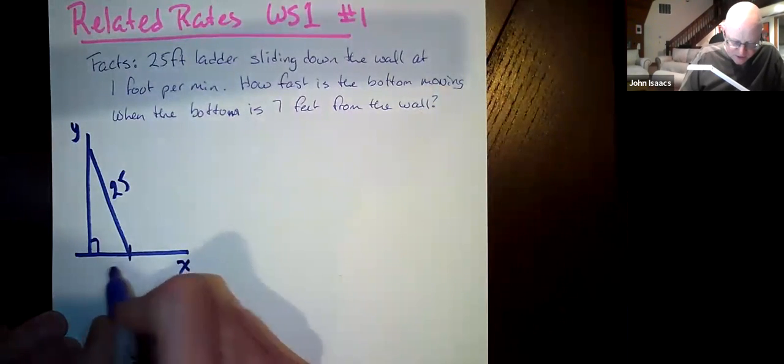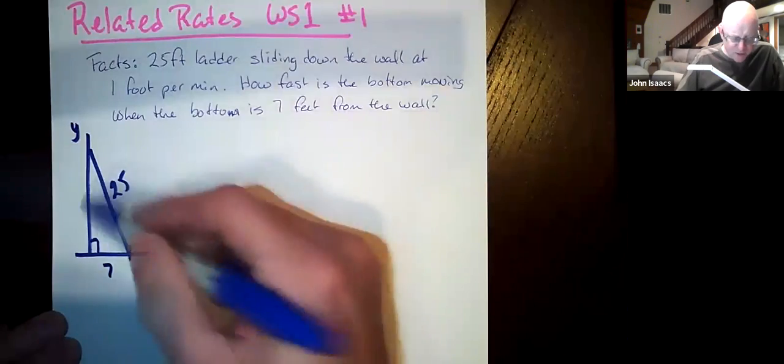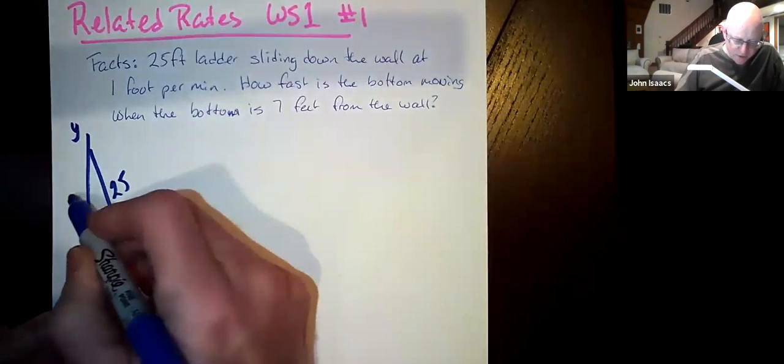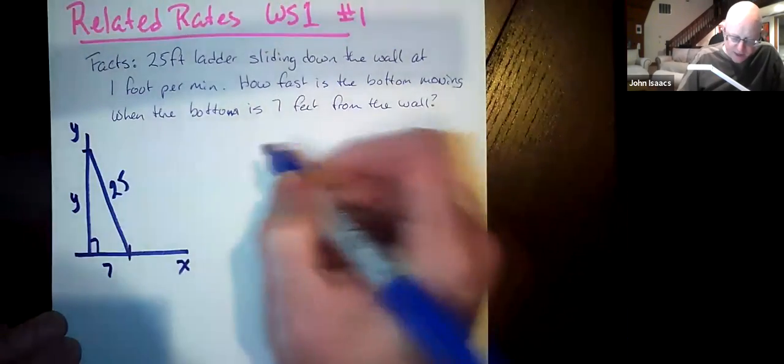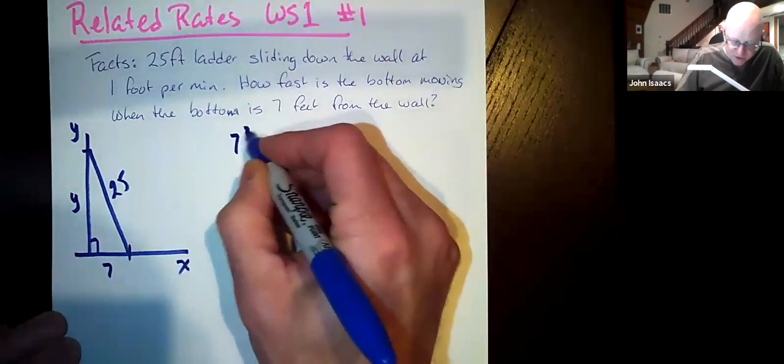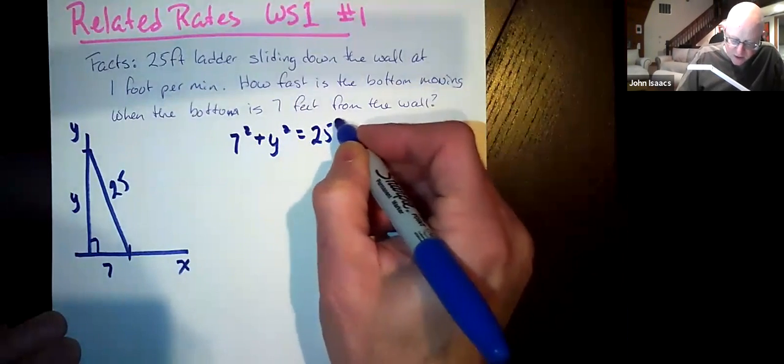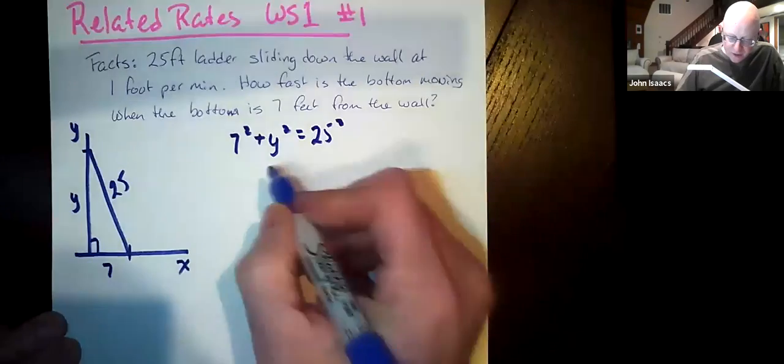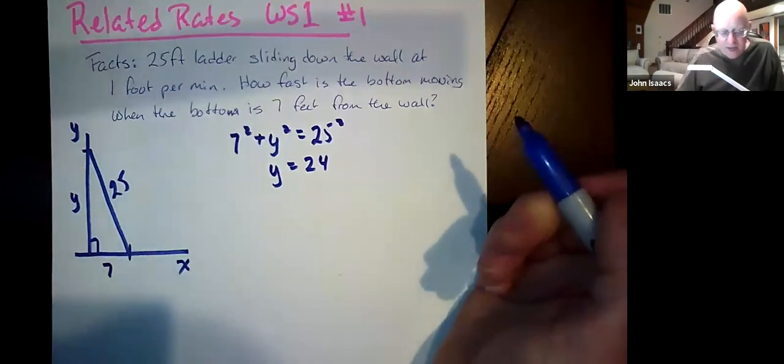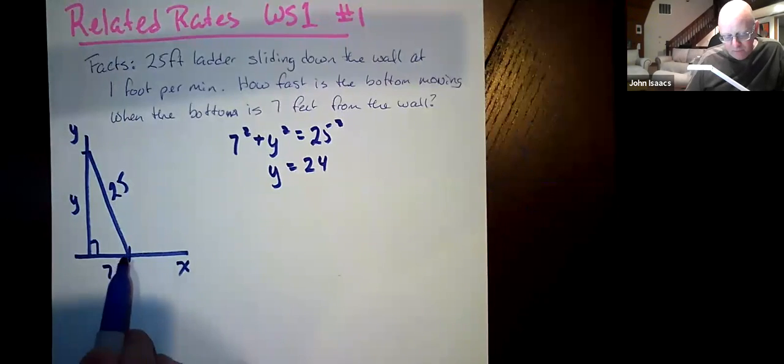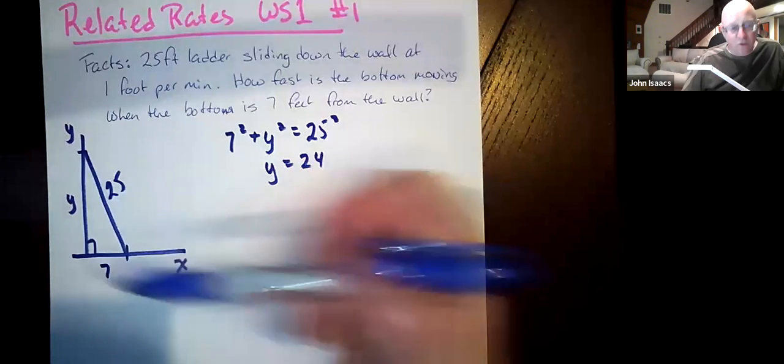And if x is at seven, that means this length is seven. And if we think of this as being a right triangle, well, then this y distance here must be the Pythagorean theorem. So we must have 7² + y² = 25². And if you do the math on that, y equals 24. So that means at this moment when the base of the ladder is seven feet from the floor, the height of the ladder is 24 feet.